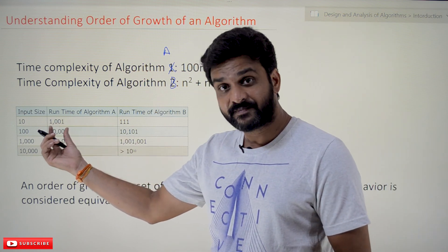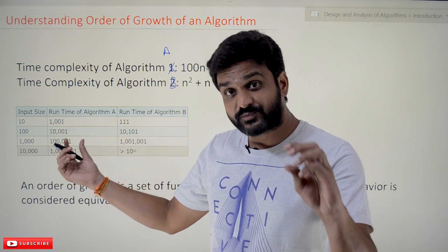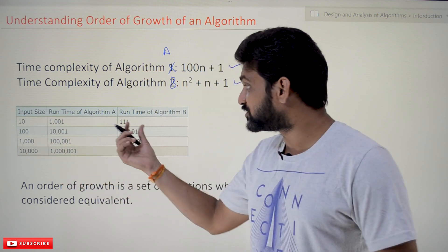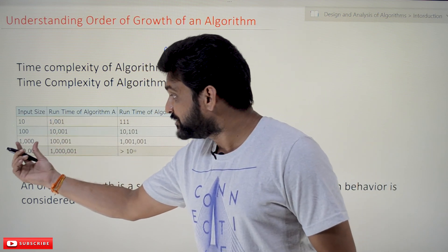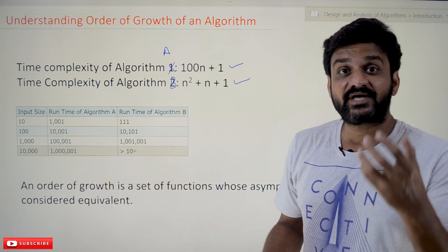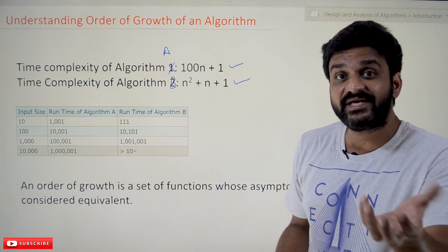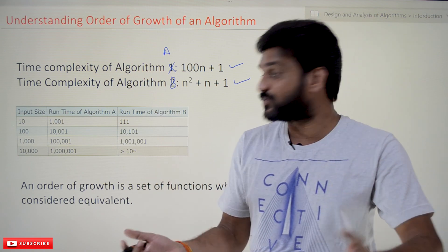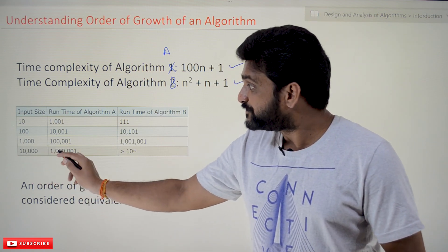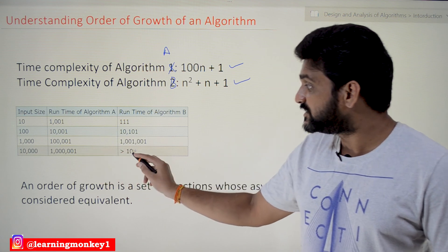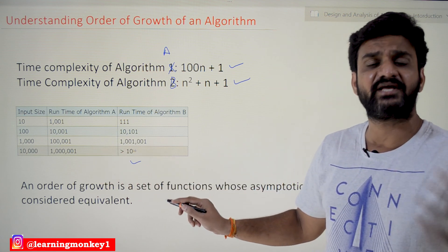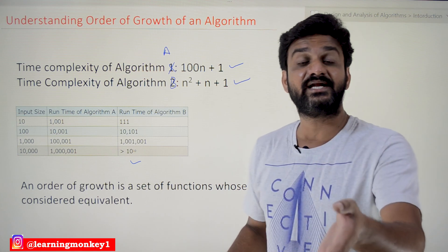As the input size is small, the run time of algorithm B was lower, but the run time of algorithm B is increasing as input size grows. For example, if you take an input size of 10,000, the run time of algorithm A is very very high — it is 10 to the power 10 number of steps getting executed.